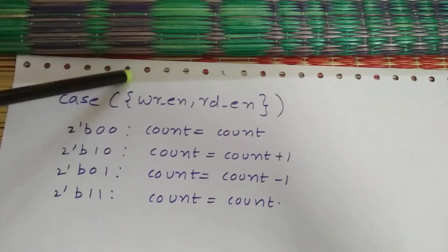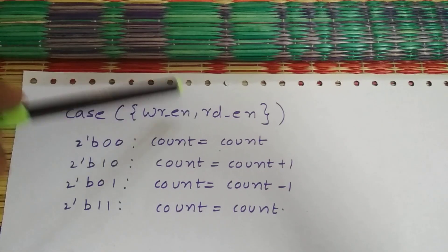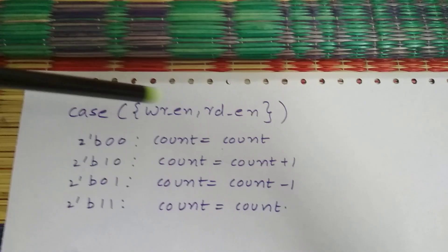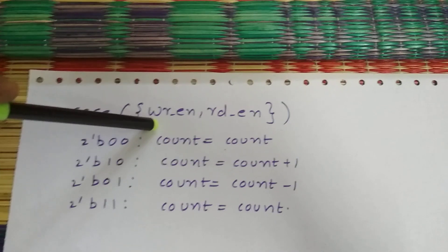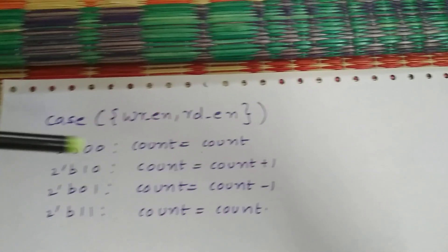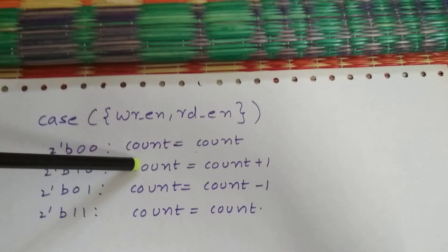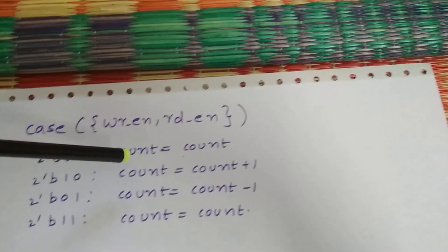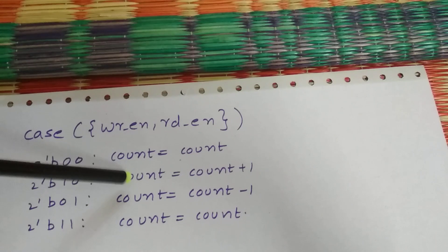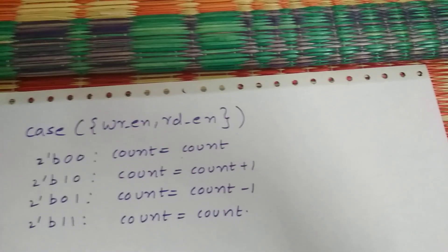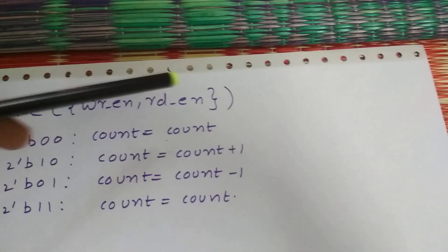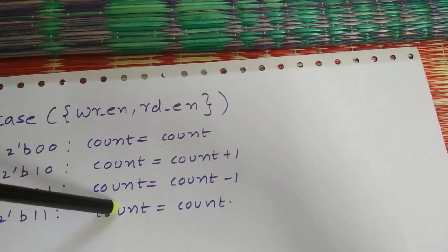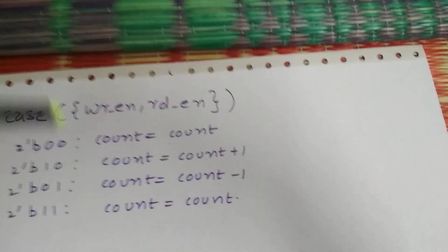I'm going to use write enable and read enable, and based on write enable or read enable I'll count up. If it's write enable, that means you want to write into the FIFO - I will increase this variable and count the depth of it. If it's depth equal to the almost full, I'll stop and say it's full. If it's zero, it's empty. Whenever I read, I'll reduce the counts so that I will know where the pointer is.